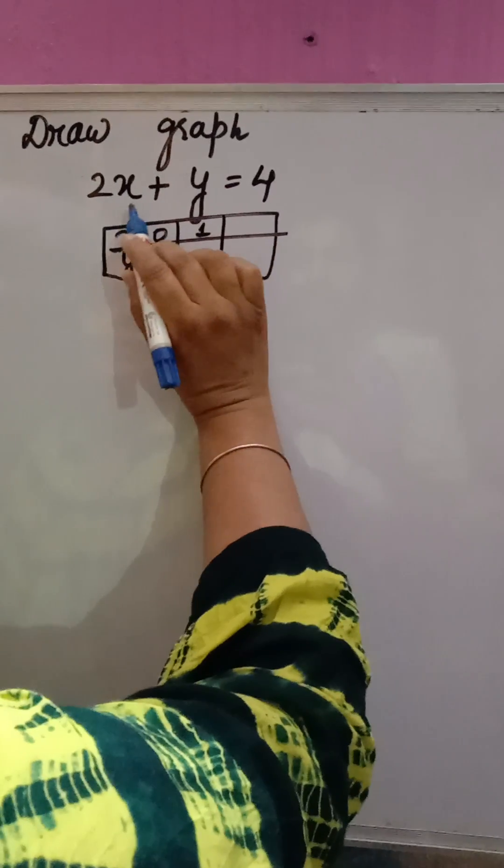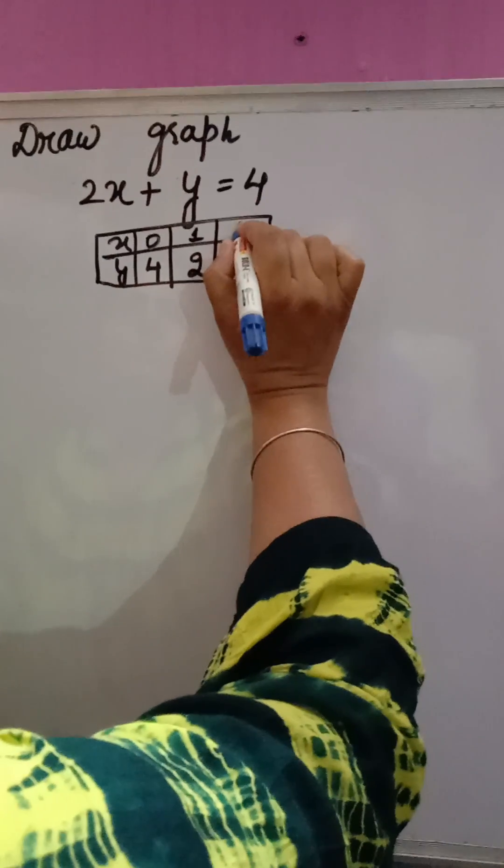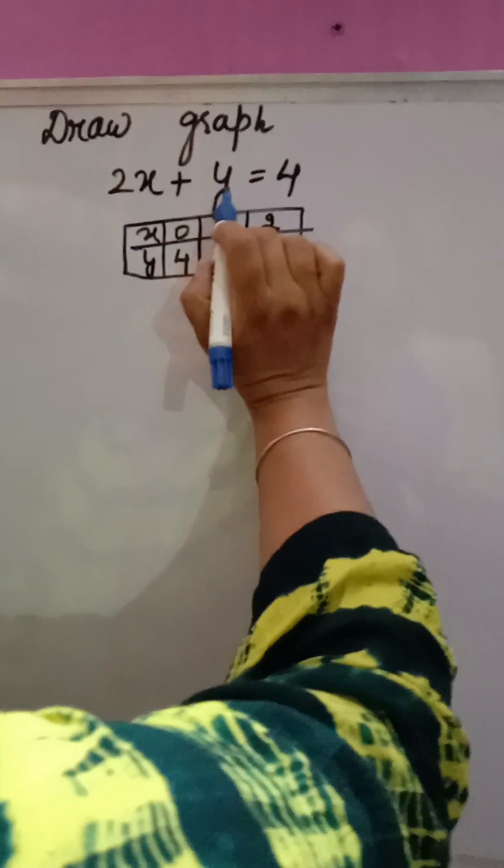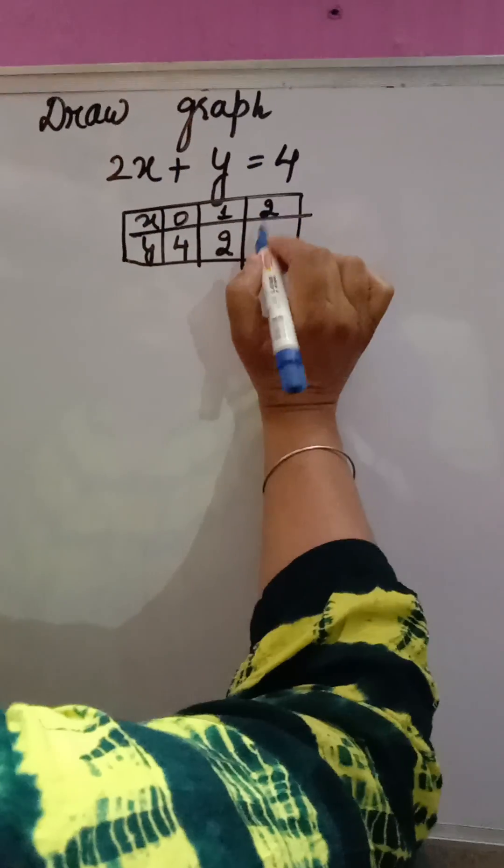If you are giving x value 1, 2 into 1, 2, y will be 4 minus 2, that is 2. If you are giving x a 2, y will be 4 minus 2 into 2, that is 4, 4 minus 4, 0.